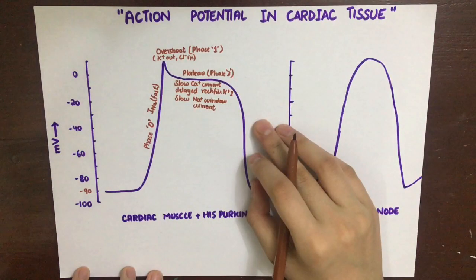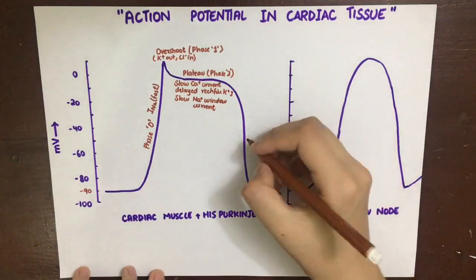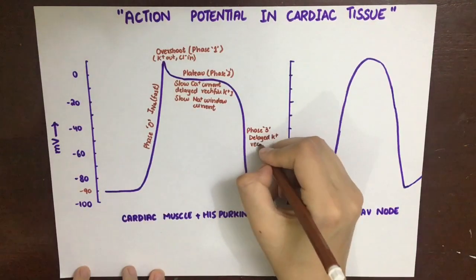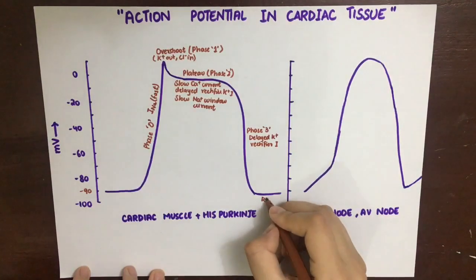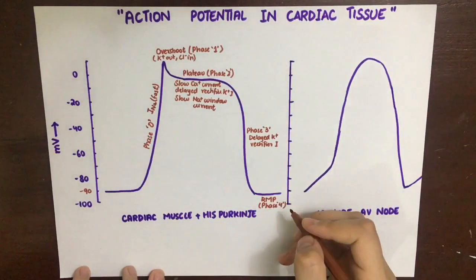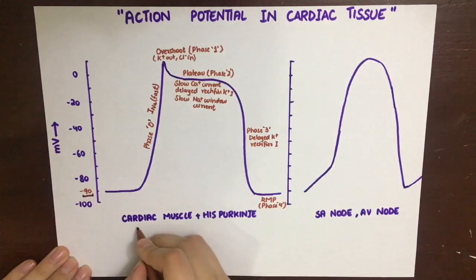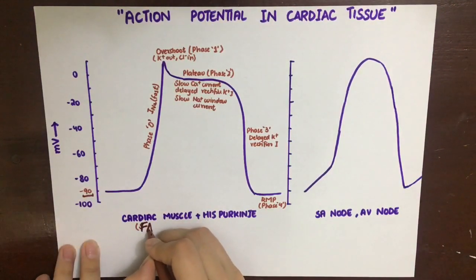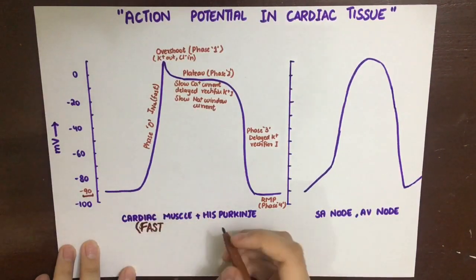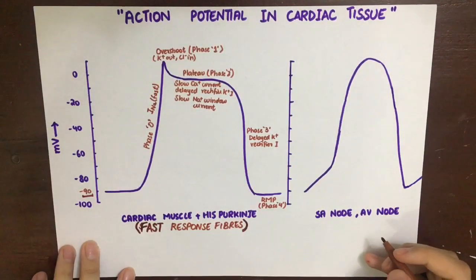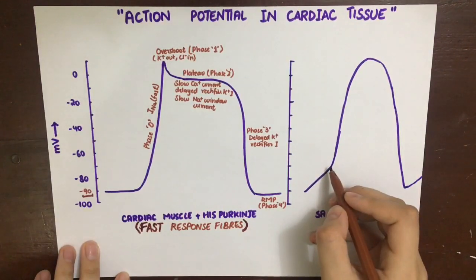Another important determinant of the plateau phase is the slow sodium window current. Next, after phase 2 we have phase 3, which is the rapid repolarization phase. It is due to the delayed potassium rectifier current — large amounts of potassium go out of the cell, causing the cell to repolarize and return to the resting membrane potential of minus 90 millivolts in phase 4. At this resting membrane potential, more sodium channels are in the resting or ready state, making these cells more sensitive to depolarization. That is why cardiac muscle cells and Purkinje fibers are known as fast response fibers.